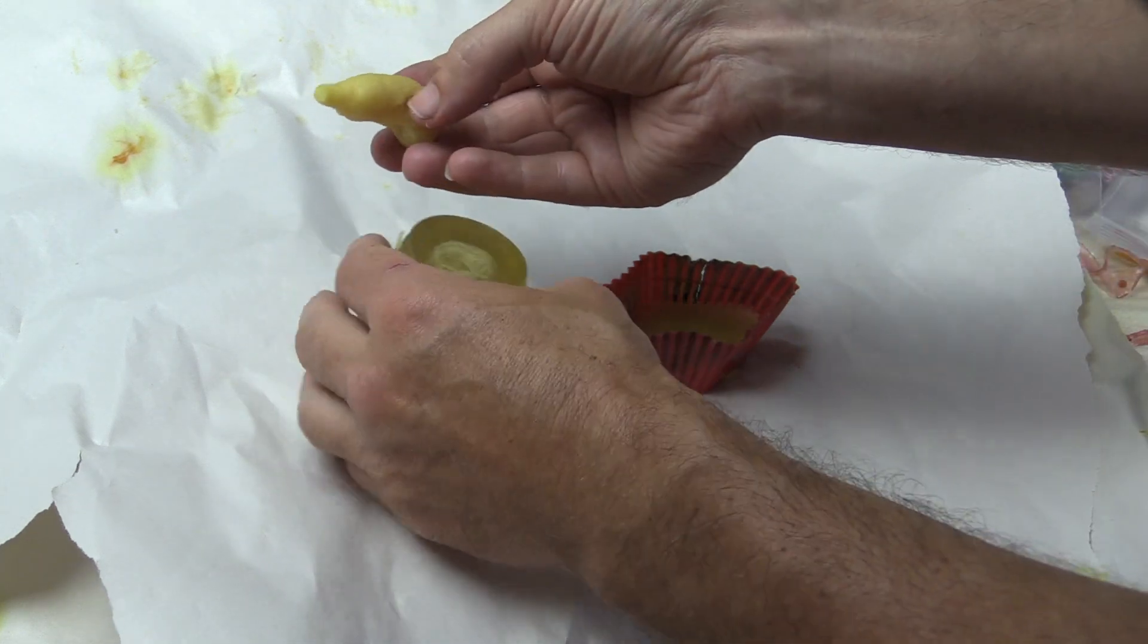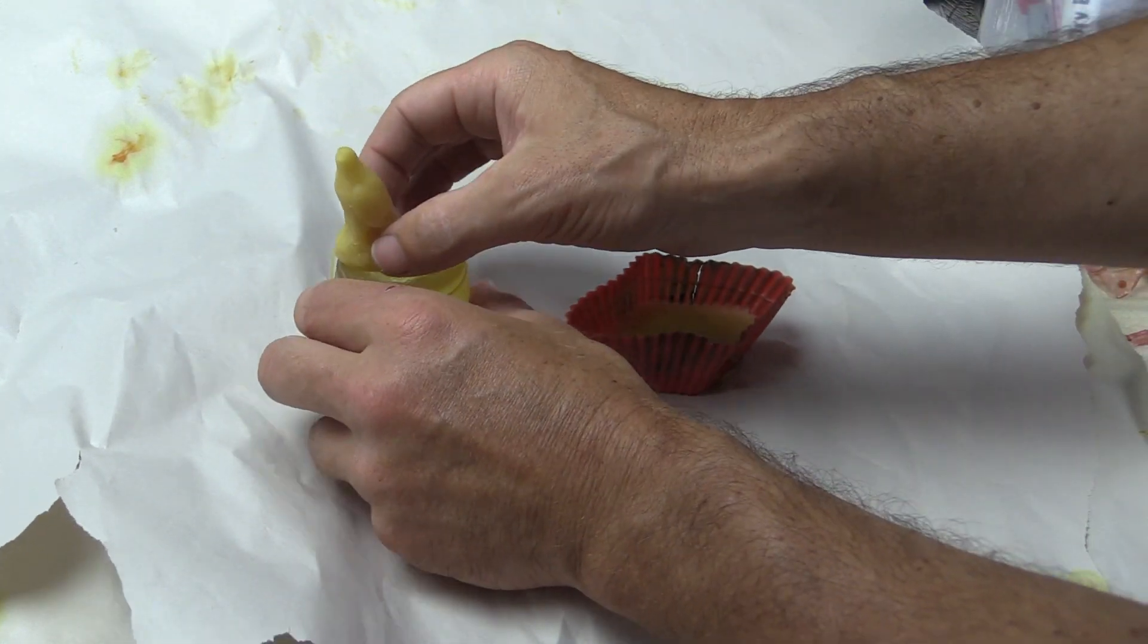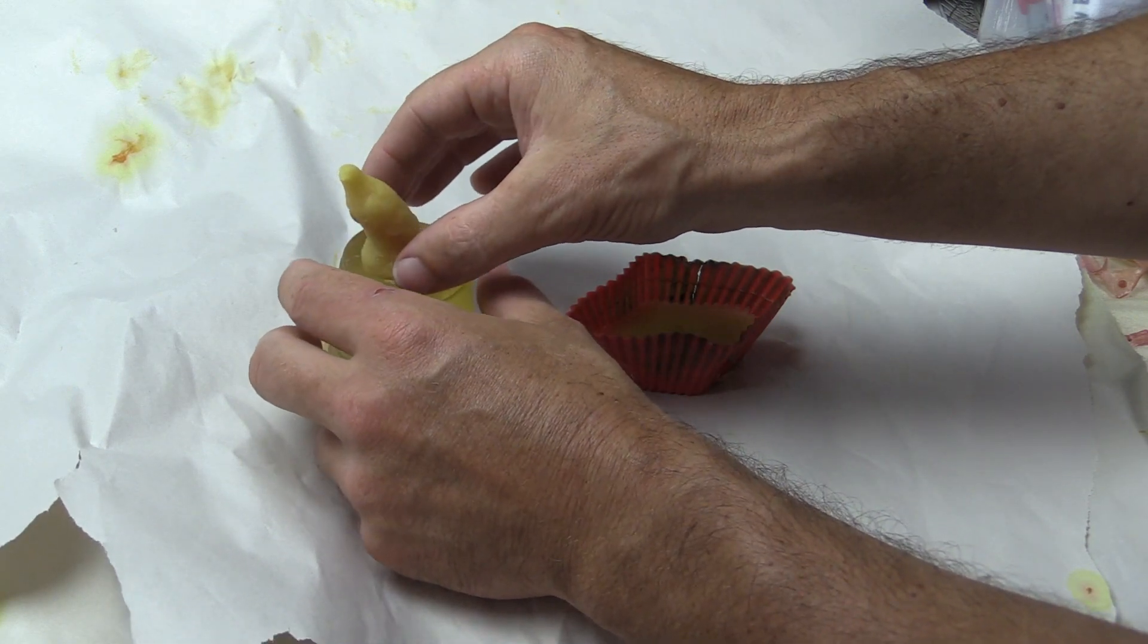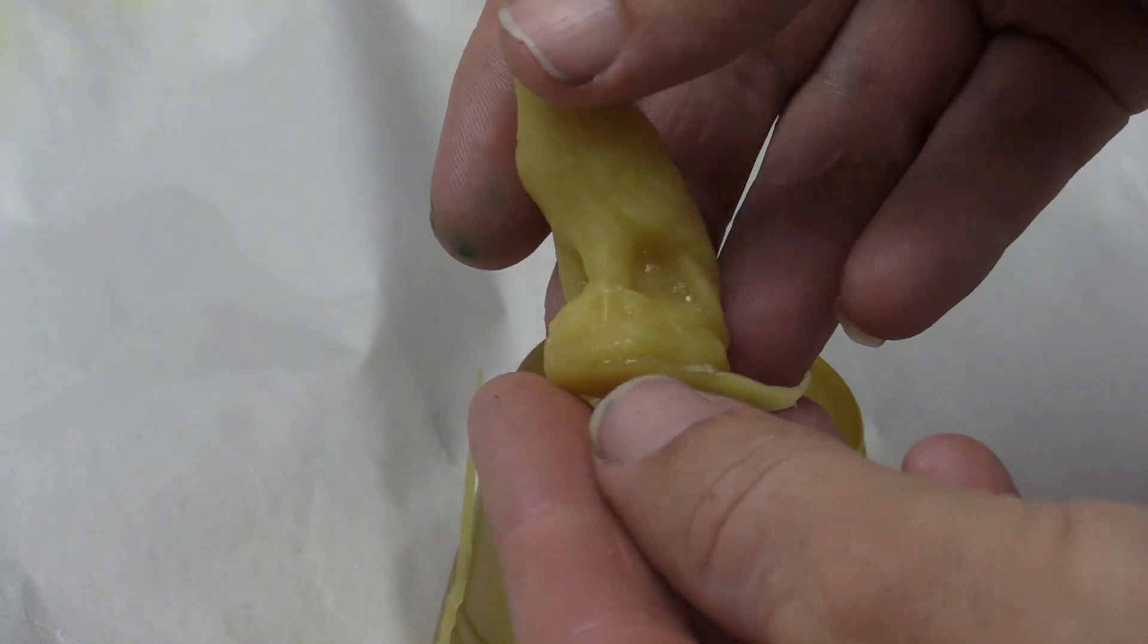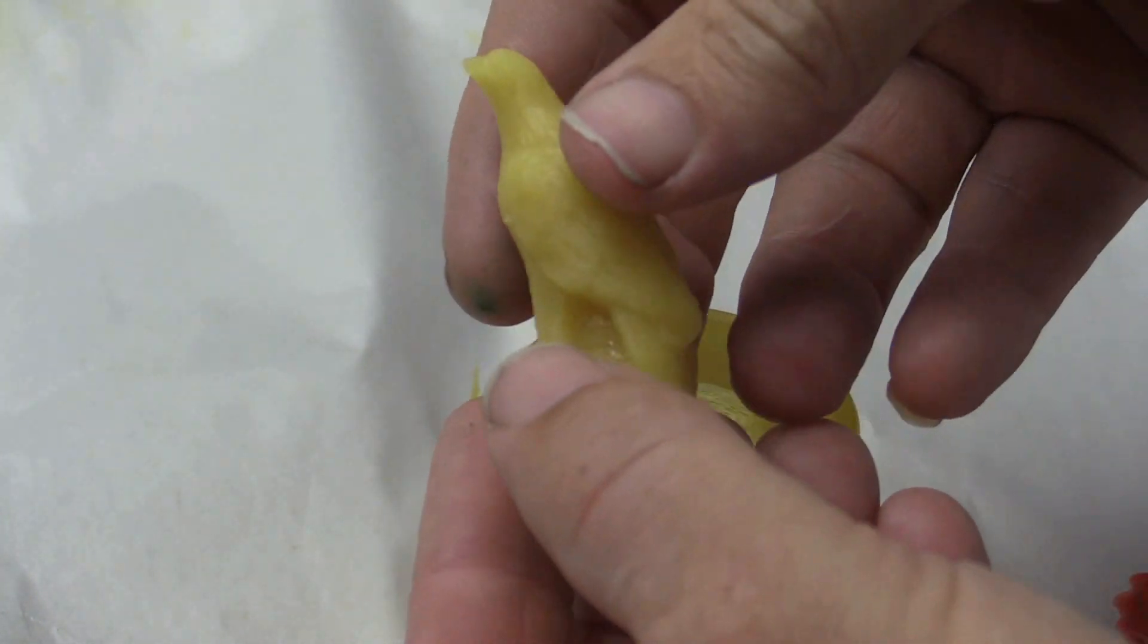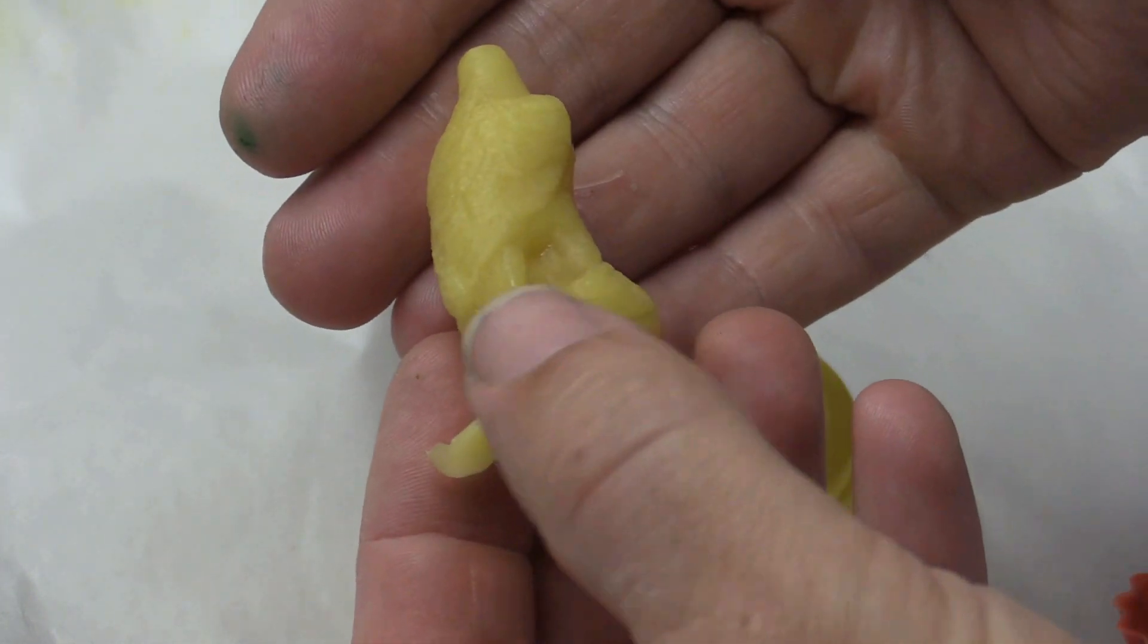After the wax has cooled for about 15 minutes I remove the wax eagle from the ComposiMold. If I was making beeswax candles this would be the finished product and it's very nice looking. Fantastic details.